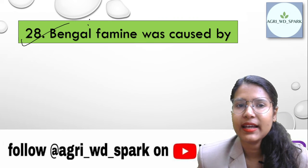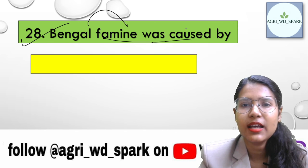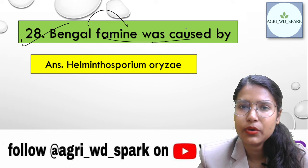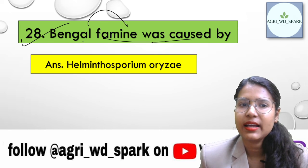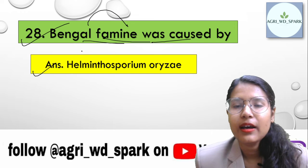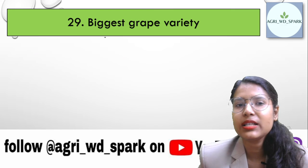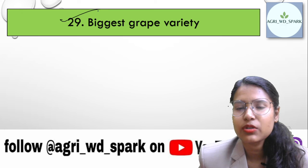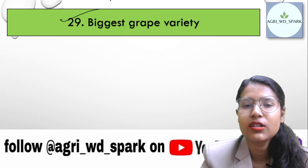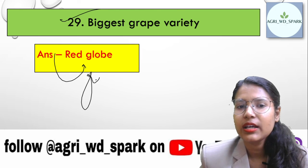The Bengal famine was caused by Helminthosporium oryzae. Next question: the biggest grape variety is called Red Globe — Red Globe is the biggest variety of grapes.